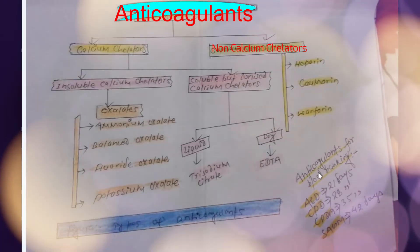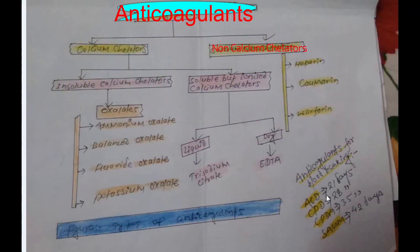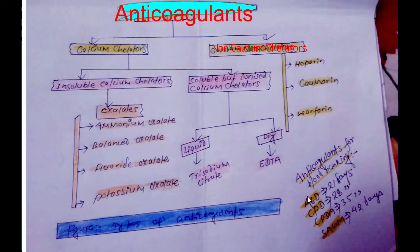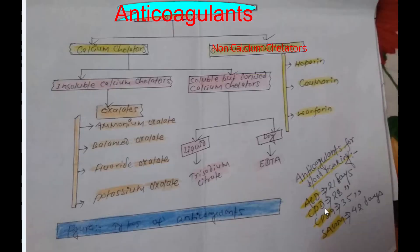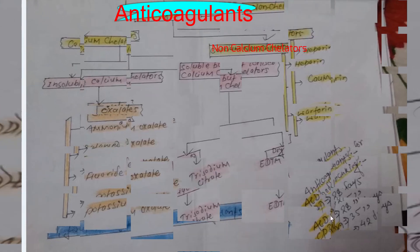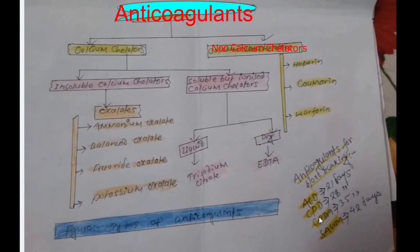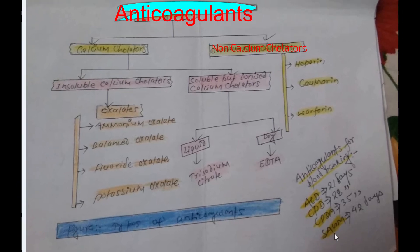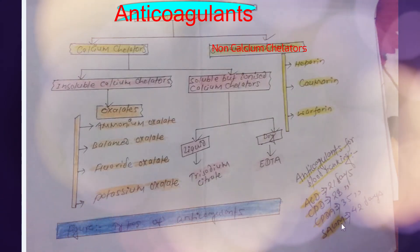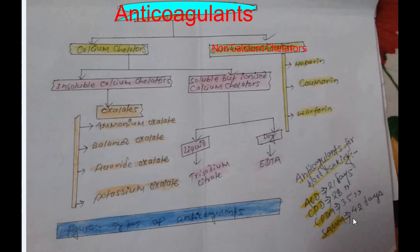Now about anticoagulants for blood banking. Acid citrate dextrose (ACD) is the anticoagulant used in blood banks; the expiry date of whole blood or packed cells is 21 days. If citrate phosphate dextrose (CPD) anticoagulant is used, then 28 days. If citrate phosphate dextrose adenine (CPDA) is used, then 35 days. Currently, SAG-M — saline adenine glucose mannitol anticoagulant solution — is in use, and it preserves RBCs for 42 days.